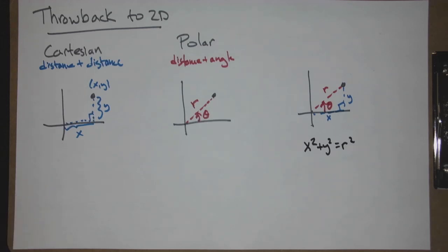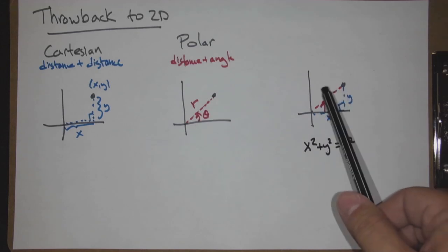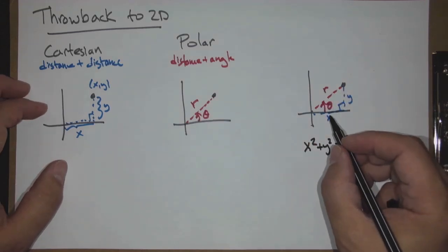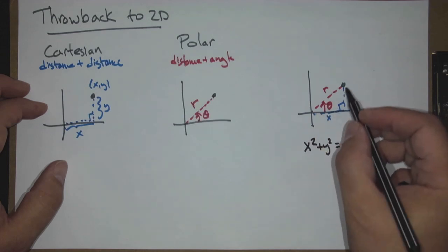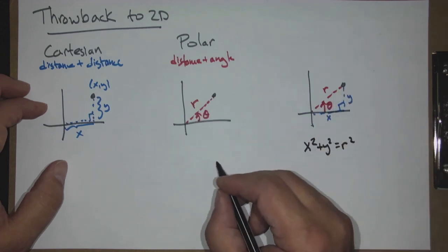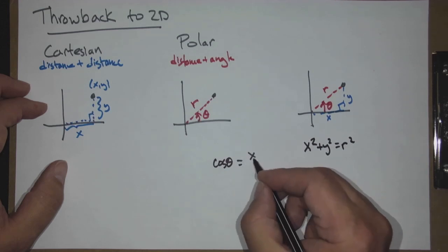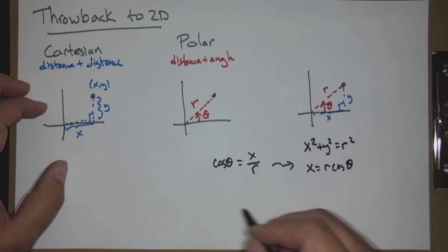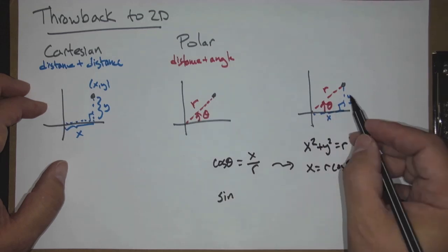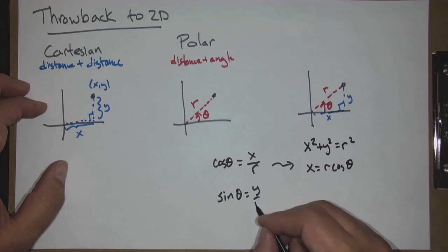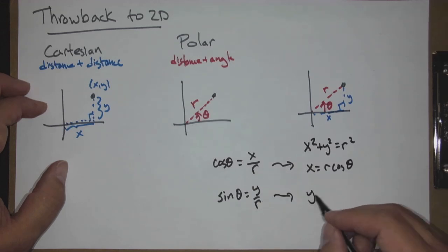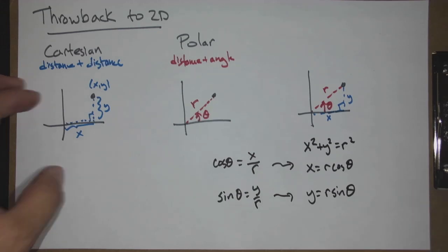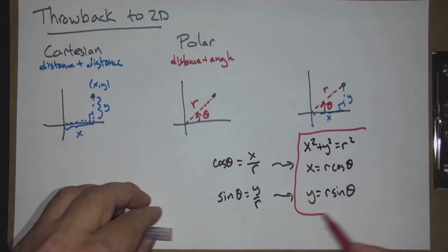Someone mentioned trig. We have an angle and three sides. X is the adjacent side, so cosine theta equals adjacent over hypotenuse, which gives us X equals R cosine theta. Similarly, Y is the opposite side, so Y over the hypotenuse gives us Y equals R sine theta. These equations allow us to go back and forth between Cartesian and polar, and we should keep them in mind.